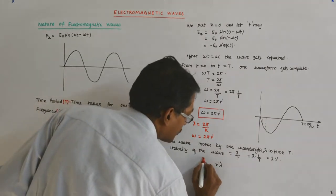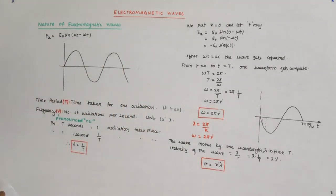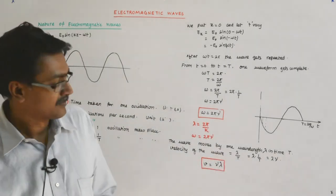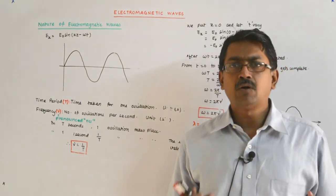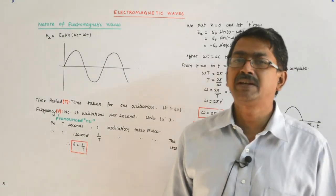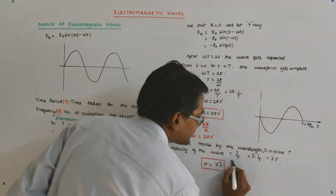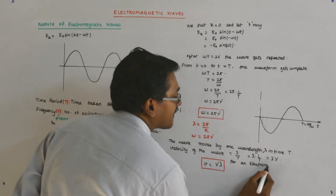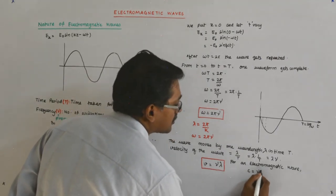This relation v = νλ was already derived when you were in around class 9th or 10th being taught sound. This holds good for any kind of wave. Now, we are talking about an electromagnetic wave. The speed of an electromagnetic wave in vacuum is the speed of light, so for an electromagnetic wave: C = νλ.